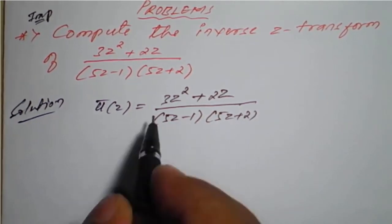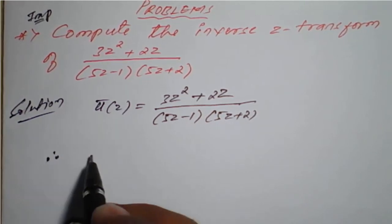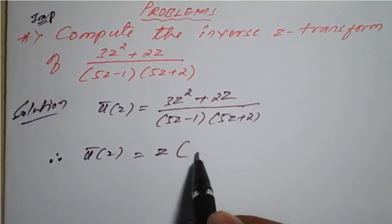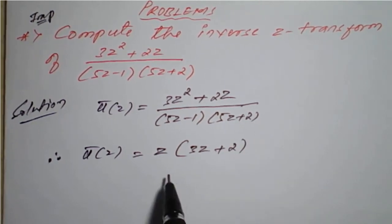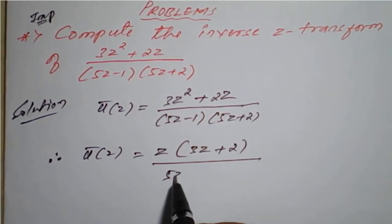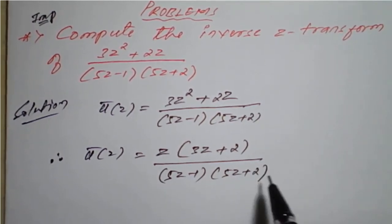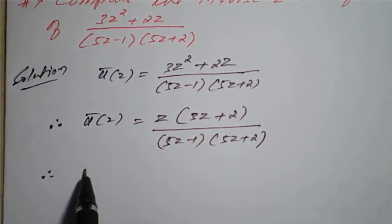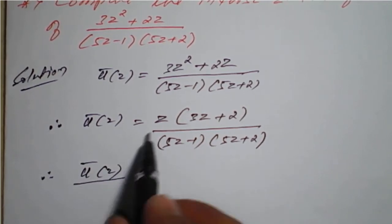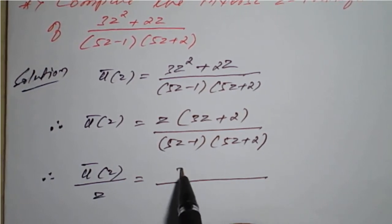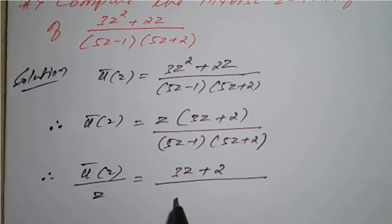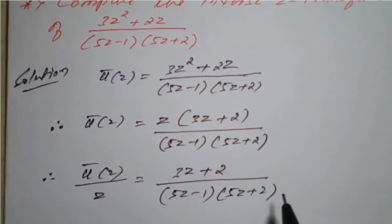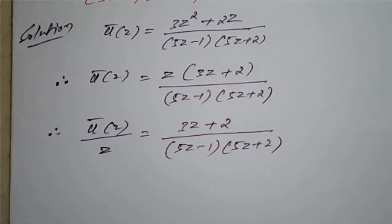Once we get this, we go for the first rearrangement. In the numerator, take z common, so it becomes 3z + 2, all divided by (5z - 1)(5z + 2). Then cross-multiply this z to the left-hand side to get u'(z) divided by z, which makes simplification easier. The left part is (3z + 2) divided by (5z - 1)(5z + 2).